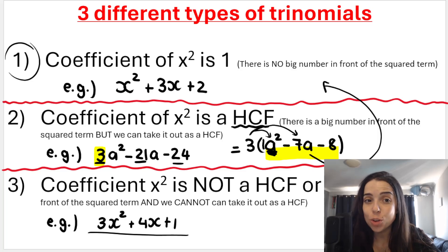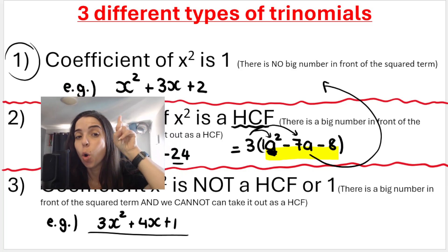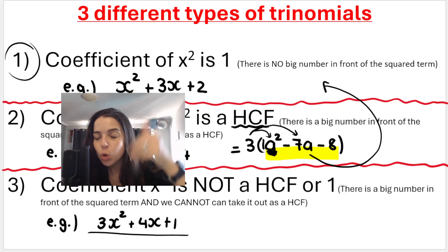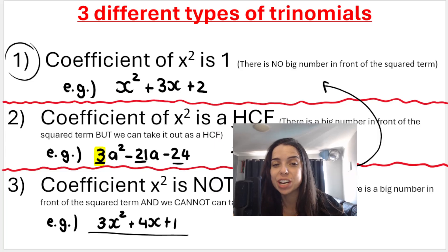In the previous video, we looked at trinomials that had a coefficient of the squared term being 1, like this, where we can factorize it in the basic or normal way that you learn in grade 9 already.